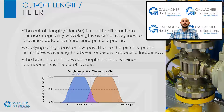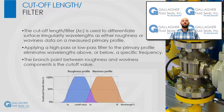Applying this high-pass or low-pass filter to the primary profile eliminates wavelengths above or below a specific frequency. At this intersection, the wavelength amplitude is both imparted and reduced to 50% at the cutoff value. Since a measured surface will demonstrate a spectrum of wavelengths for both roughness and waviness, the cutoff value should be carefully specified in order to separate the two spectrums without distortion, and the surface texture component of interest can be characterized.